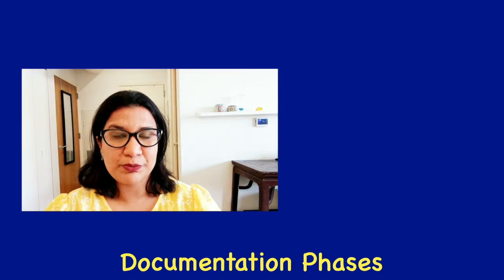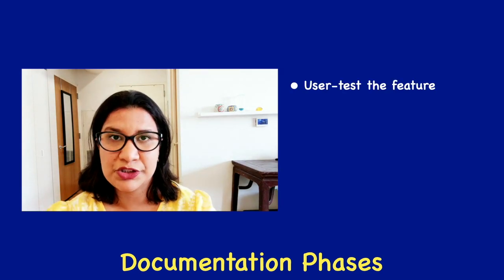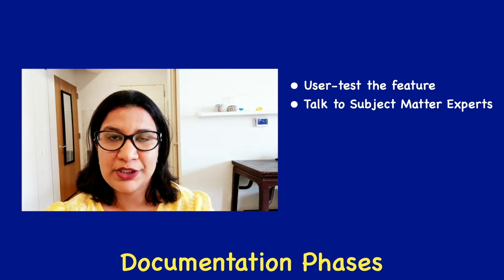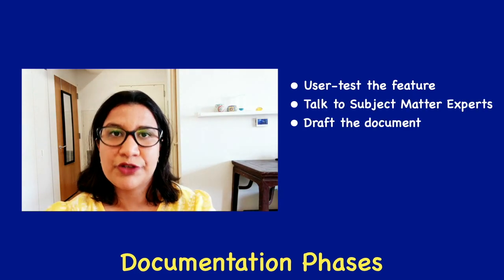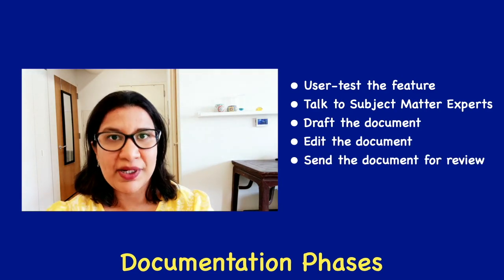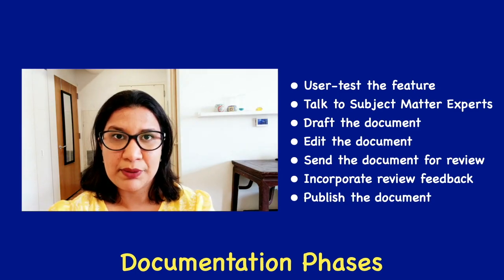Every documentation project goes through different phases. You have to user test the feature or the change you're working on, then talk to the engineers to make sure you understood things correctly, then draft it, edit it, send it for review, wait for the review feedback, and then incorporate the review feedback before you can publish the document. For each of the tasks on the GitHub project, I try to mentally map which phase of the documentation process the task is in.